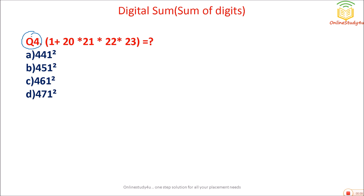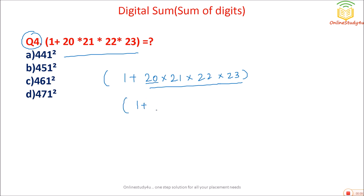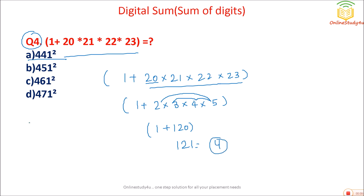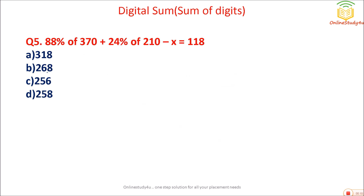Question 4: Multiply 20 into 21 into 22 into 23. Using digital sum: 2, then 2 plus 1 is 3, 2 plus 2 is 4, 2 plus 3 is 5. So 1 into 2 into 5 is 10, into 4 is 40, into 3 is 120 — digital sum is 1 plus 2 plus 1 which is 4. Which option gives digital sum 4? Option A: 41 squared — 4 plus 4 is 8, plus 1 is 9, equals 0. Option C: 4 plus 6 is 10, plus 1 is 11, digital sum is 2; 2 squared is 4. So option C is the correct answer.